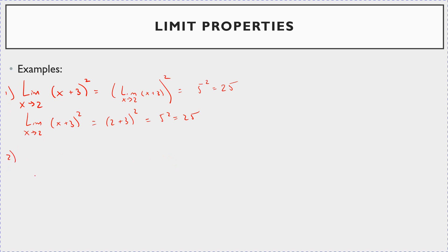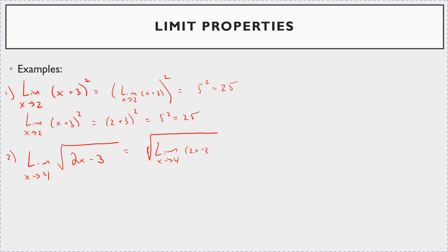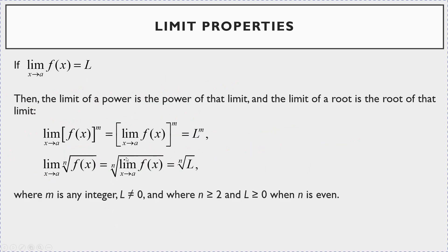Here's an example with a radical: the limit as x goes to 4 of the square root of 2x - 3. You can evaluate this as the square root of the limit as x goes to 4 of (2x - 3). Plug 4 in: 2 times 4 is 8, minus 3 gives the square root of 5. Some of these properties will be more useful as we get to much harder problems later on.